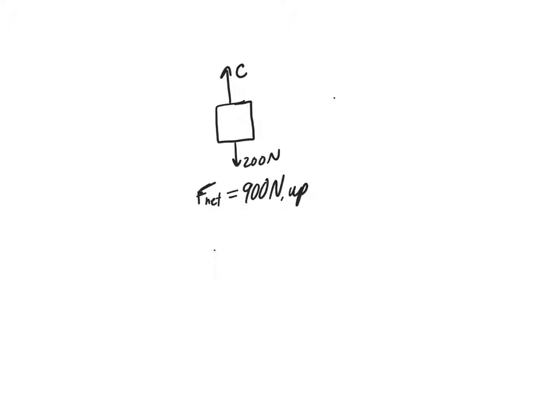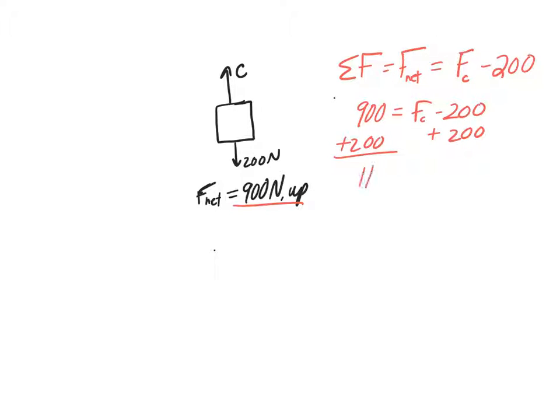The next question asks us to find the force of C in this situation. So we have F net is given to us 900 newtons. So the net force, that's another way of writing net force, that little E sign there means summation. Well, we have C pulling up, so force C, whatever it is, minus, and we have 200 pulling down. So we could say 900 is equal to force C minus 200, and we're going to add that to the other side. So we get 1100 newtons is our force of C. Nice easy one.